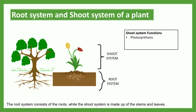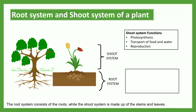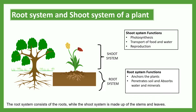Shoot system functions: the shoot system is responsible for photosynthesis, for transport of food and water, and for reproduction. Root system functions: the root system is responsible for anchoring the plant to the soil; it penetrates the soil and absorbs water and minerals, and stores food.